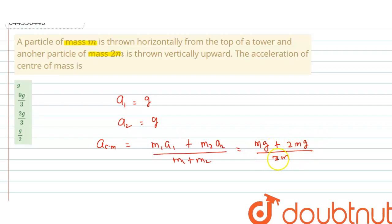This gives 3mg by 3m, which equals to small g. So correct answer is small g.